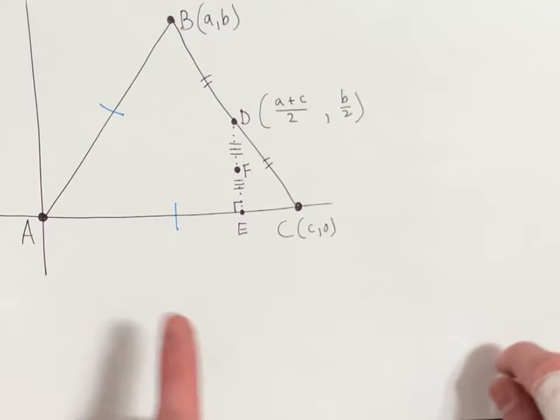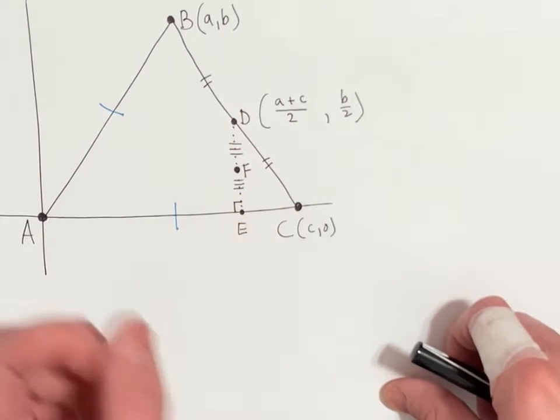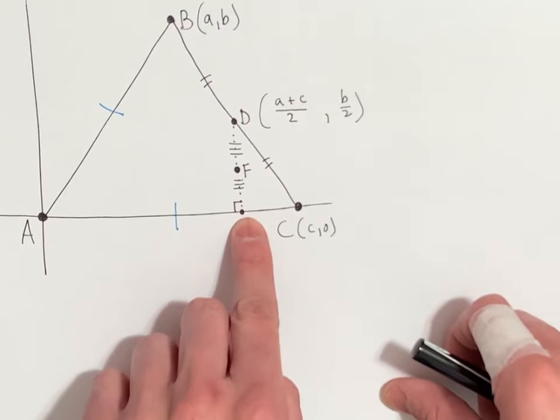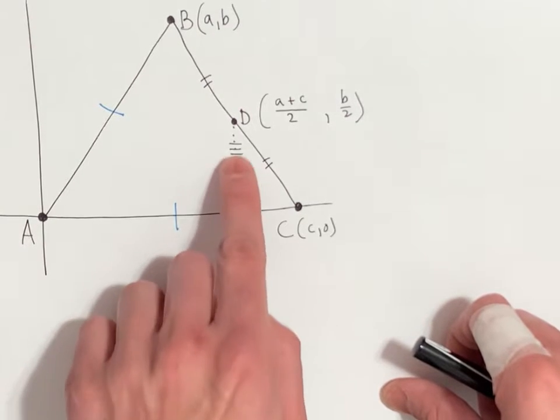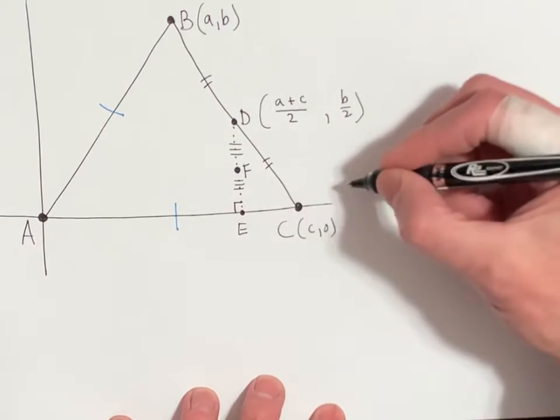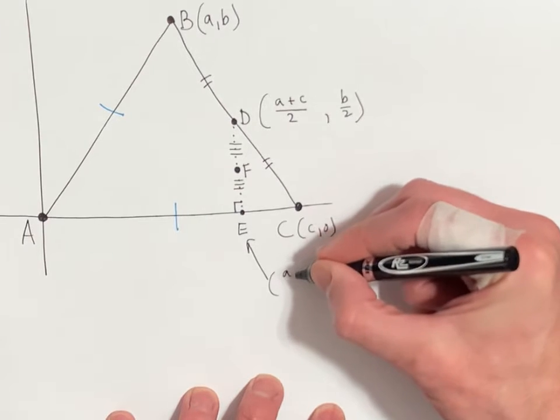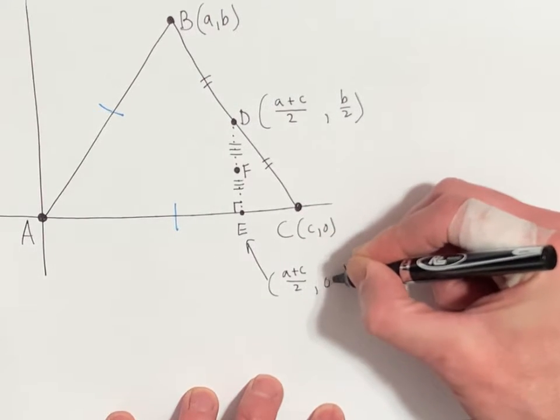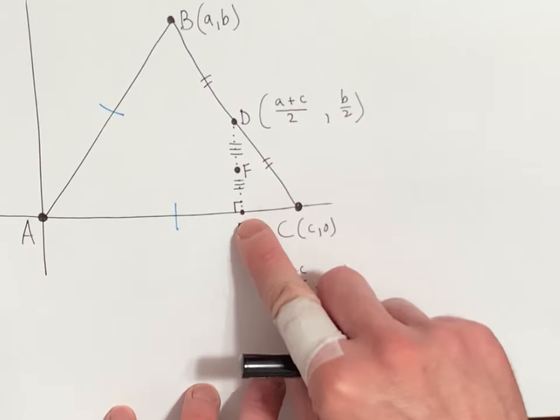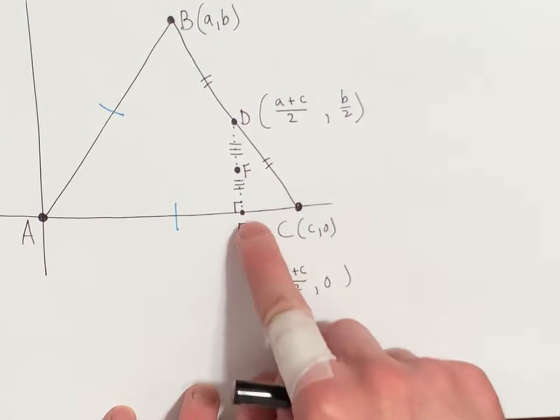That helps us because E and F are directly beneath point D. For instance, E is the same as D but it's on the x-axis. For that reason, we know the coordinates of point E. It would be A plus C over 2, comma 0, because E is at the x-axis so the y coordinate is 0. That takes care of point E.